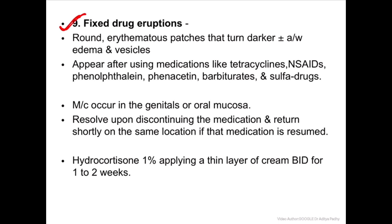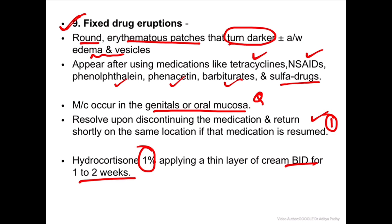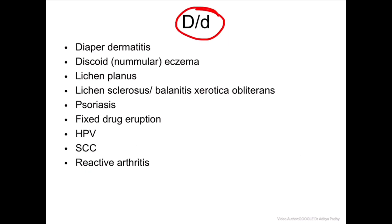The ninth type is fixed drug eruption - round erythematous patches that turn darker, with or without edema and vesicles. In the history, look for use of tetracycline, phenolphthalein, barbiturates, or sulfa drugs, as these can cause fixed drug eruption most commonly in the genitalia and oral mucosa. Discontinuing the medication is the primary treatment; if medication is restarted, lesions may reappear. Hydrocortisone one percent twice daily for one to two weeks is helpful.